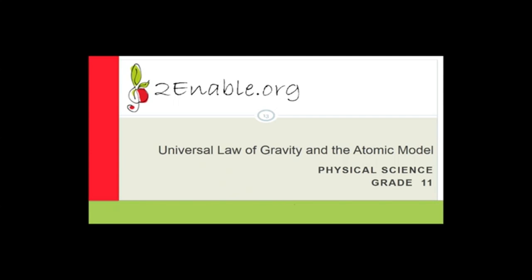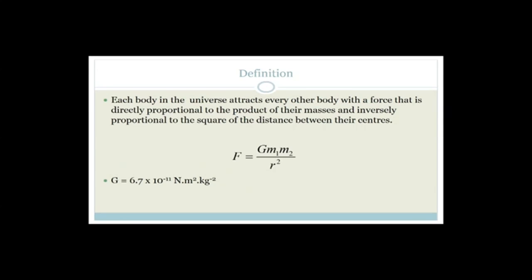Now let's get going with the Universal Law of Gravity. Newton came up with this law, which states that each body in the universe attracts every other body with a force that is directly proportional to the product of their masses and inversely proportional to the square of the distance between their centers. Force is directly proportional to M1 times M2, and also proportional to 1 over R squared. Therefore, force is proportional to M1·M2 over R squared.